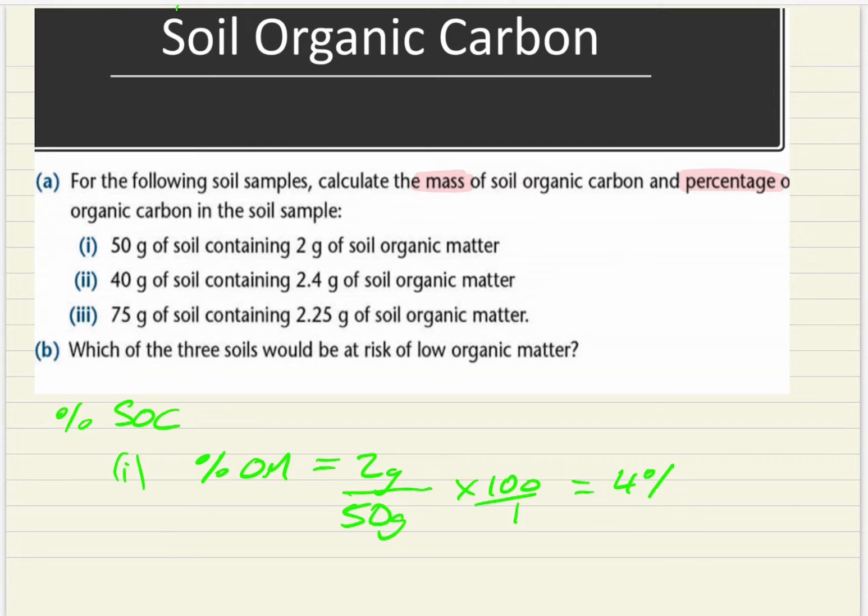So 2 over 50 is going to be 4%, and then just to make sure everyone knows that's your soil organic matter percentage. So if you want to get your percentage of soil organic carbon, it's soil organic matter multiplied by 0.58. So 4% multiplied by 0.58 is going to be 2.32%.